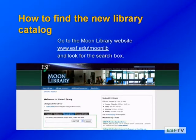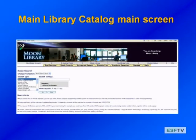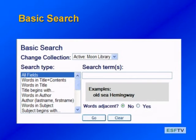To get to the new Moon Library catalog, you would want to go to the Moon Library website, www.esf.edu/moonlib. You're going to want to look for a box that says 'Search Books and More,' and once you click on that option, you'll see the main search screen.